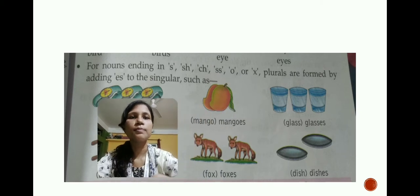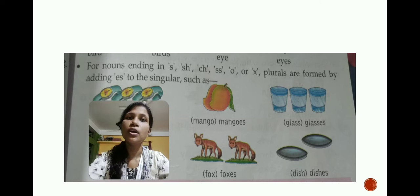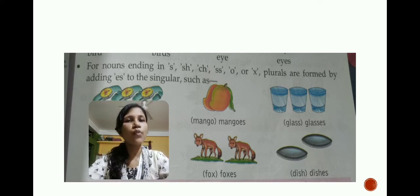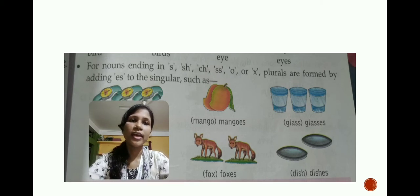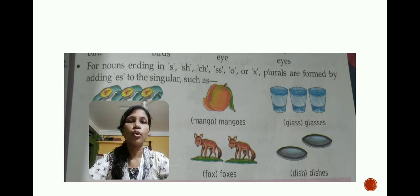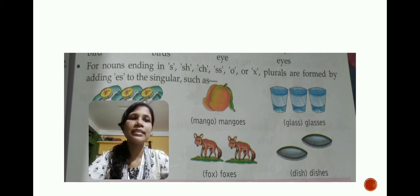The next one is 'mango' — it ends in 'O,' so the plural will be 'mangoes.' Next: 'fox' — it ends in 'X,' so it becomes 'foxes.' Next: 'glass' — it ends in double 'S,' and whenever there is a double 'S' we also use 'ES,' so it becomes 'glasses.'